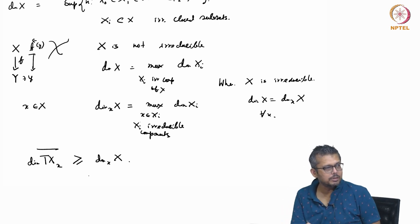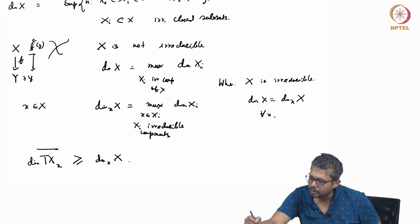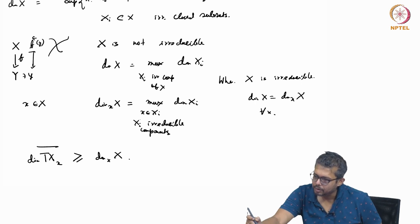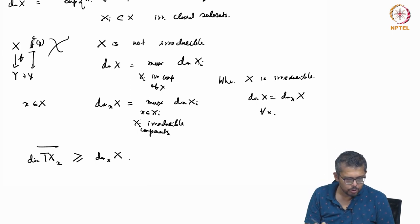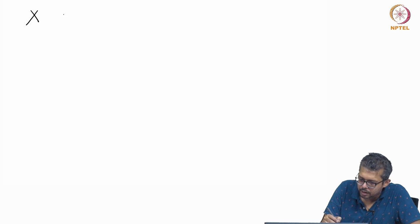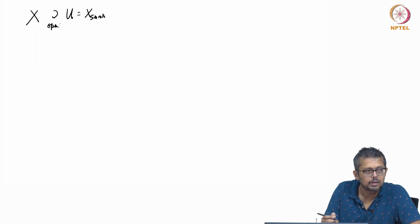The dimension of the tangent space at a point is always greater than or equal to the dimension, even if the point is not a smooth point — for example, if it has more than one irreducible component. If X is irreducible, or X is a variety, then the singular point set is a closed subset, so you have an open set U which is the smooth locus. The smooth locus is an open subset of X.